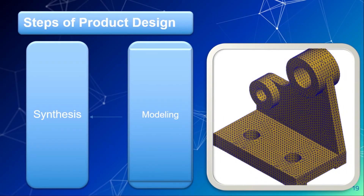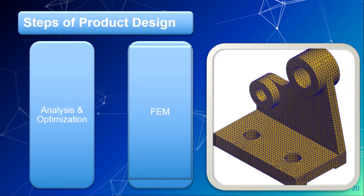Next is synthesis. After getting details about the product, we have to go for modeling — we sketch it and model it through different software. Next is analysis and optimization, which we can do using the finite element method. If we are applying a specific load on the object, we check whether the object will break or sustain that load. If it is not sustaining, then we go for redesigning.